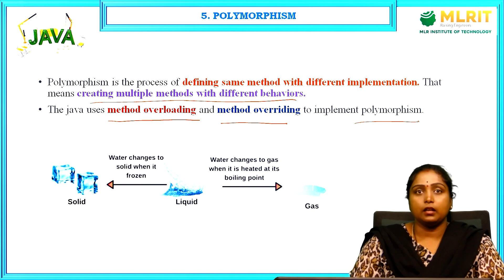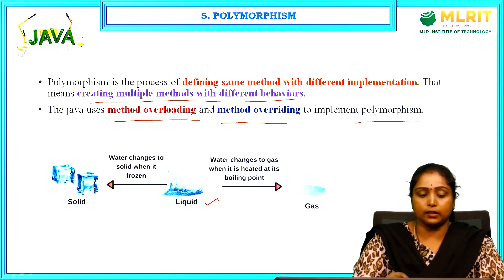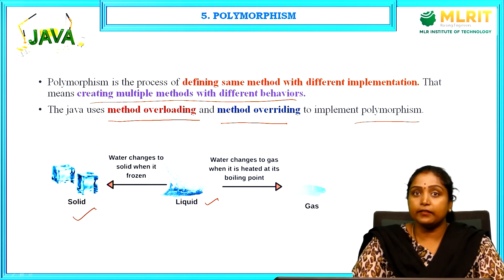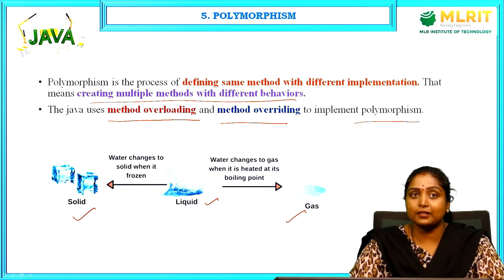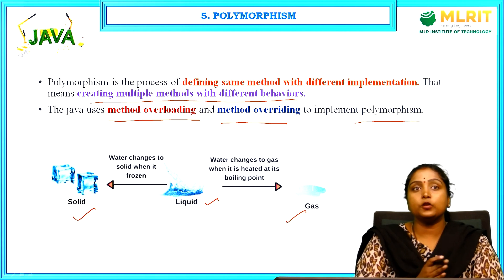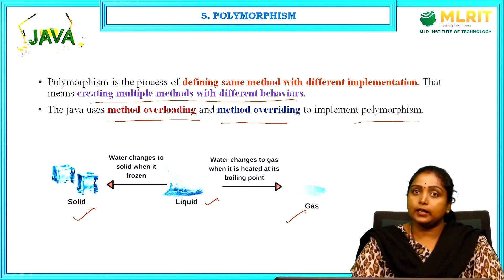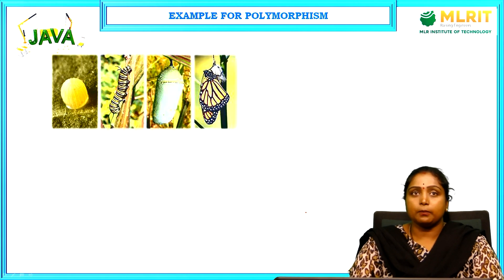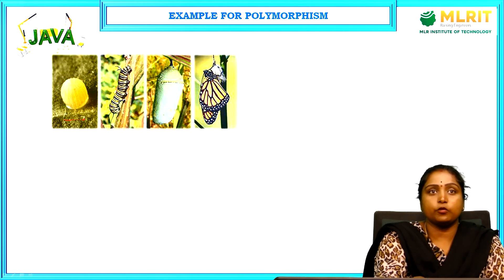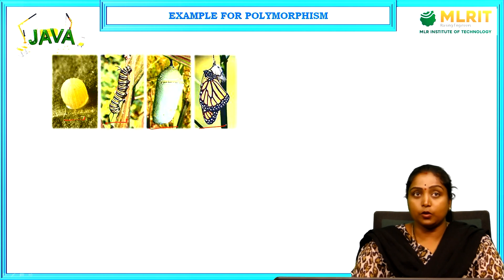A good example of polymorphism is water. When water is in its normal state it is liquid; when you freeze it, it becomes solid ice; when you boil it, it evaporates as gas. The state of water changes accordingly — it is the same substance in many forms. Another example is the butterfly: it starts as an egg, then becomes a caterpillar, then a pupa, and then a butterfly — one egg changing through many stages.